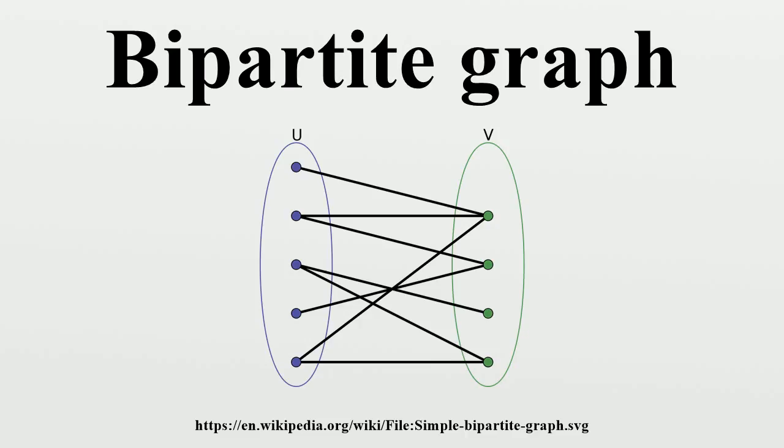Hence removing those vertices kills all odd cycles and leaves a bipartite graph. The edge bipartization problem is the algorithmic problem of deleting as few edges as possible to make a graph bipartite and is also an important problem in graph modification algorithmics. This problem is also fixed parameter tractable and can be solved in time O(2^k m), where k is the number of edges to delete and m is the number of edges in the input graph.